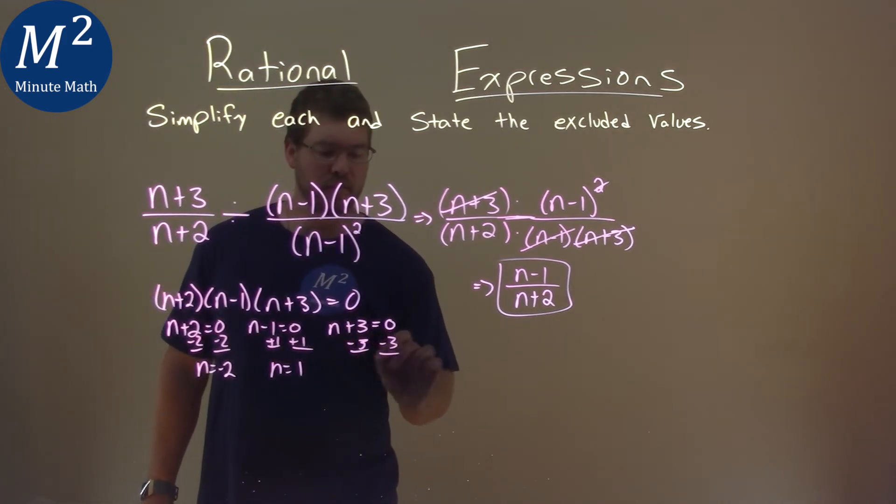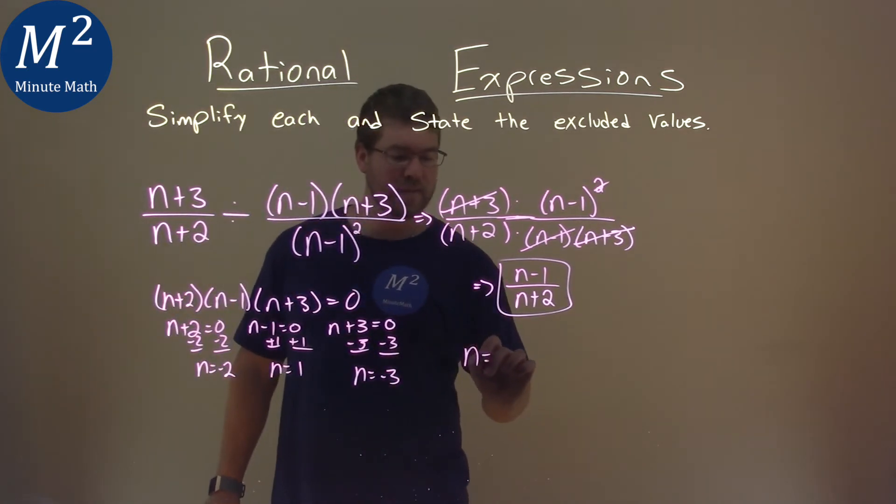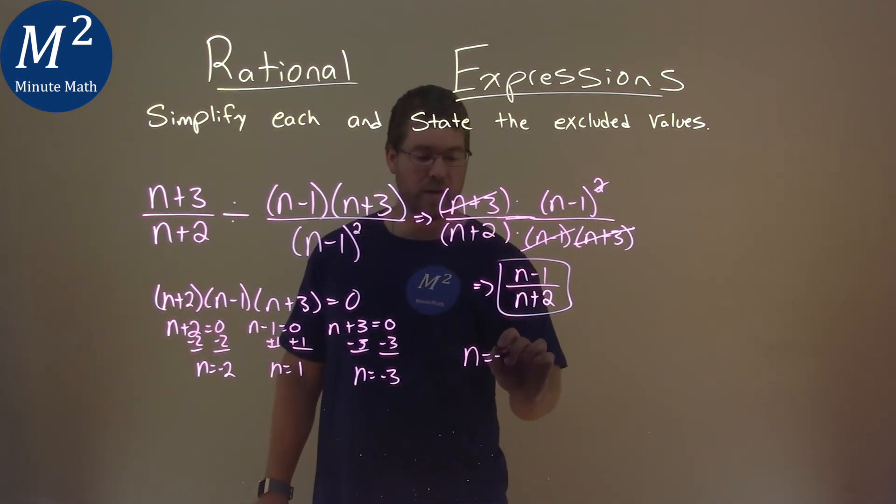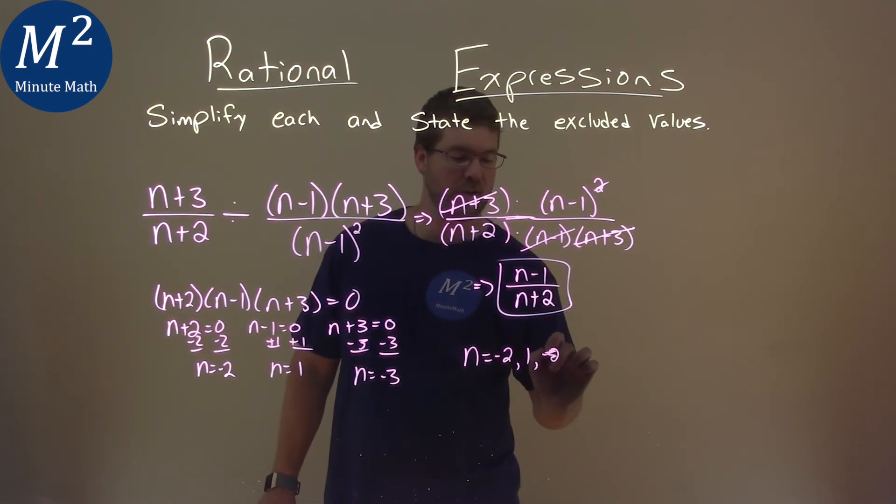Subtract the 3 to both sides, and n equals a negative 3. And so our three excluded values are when n equals negative 2, n is a positive 1, and a negative 3. I can put a 3 right here. Negative 3. There we go. Sorry, not the best, but you see it now.